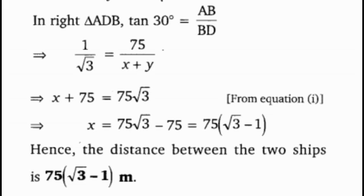Hence the distance between the two ships is 75(root 3 minus 1) meters. This is the solution for this question. I hope this video was really helpful and informative to you. If so, please give it a thumbs up. If you want to share this video with someone, please share it with your friends, and please do not forget to subscribe my channel.